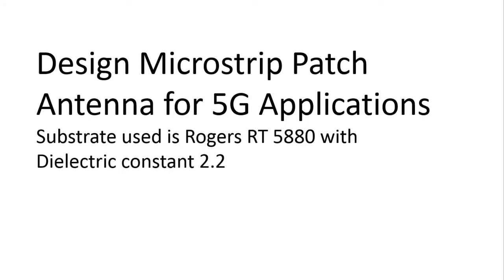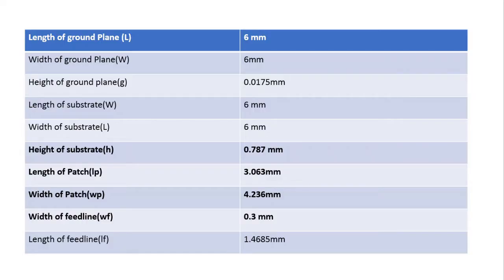Welcome to Technical Explained. This is tutorial number two on CST Microwave Studio. In this tutorial we are going to design a microstrip patch antenna for 5G application. The substrate we are going to use is Rogers RT580, which has a dielectric constant of 2.2. The length and width of the ground plane is 6.6 millimeters, and so is the length and width of the substrate, which is also 6 millimeters.